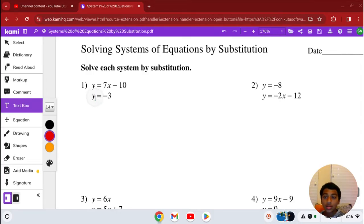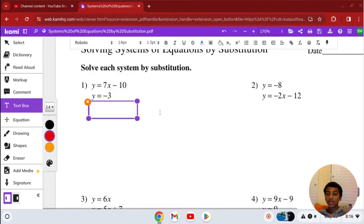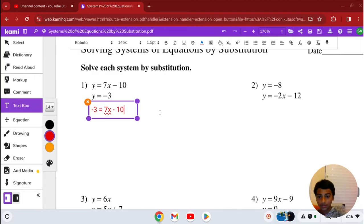Since y equals negative 3 and y equals 7x minus 10, we can plug negative 3 for y in the first equation, giving us negative 3 equals 7x minus 10. So we're just plugging it in.